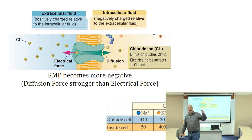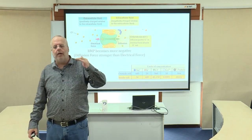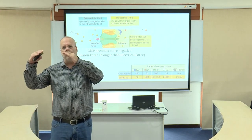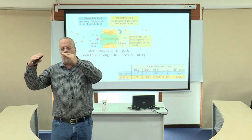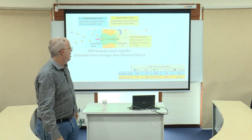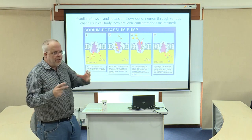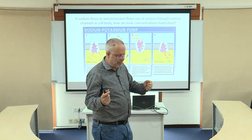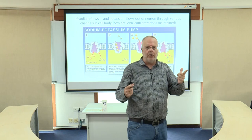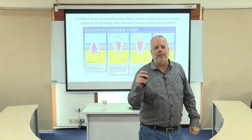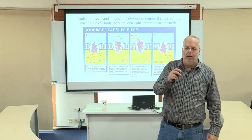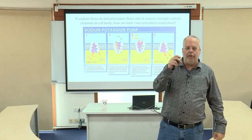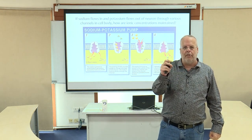The diffusion force is stronger overall, so if we open a channel for chloride, chloride is going to flow more in than out. As that negative ion moves into the cell, the interior becomes more and more negative. This is how these ions move back and forth across the membrane — through diffusion force and electrical force — allowing the neuron to maintain a difference in electrical charge where the inside is always negative relative to the outside.